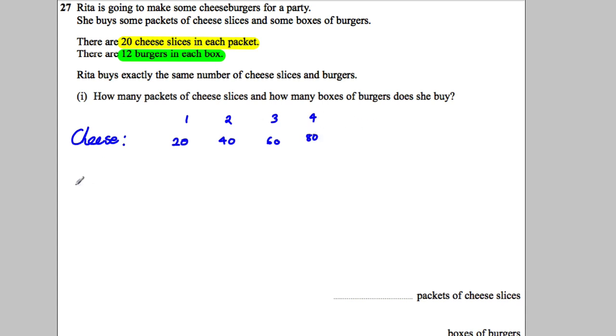Let's move on to the burgers to see if we can get them to overlap. So she buys one, she gets 12. Two, she gets 24. Three, she gets 36. Four, she gets 48. And five, she gets 60.